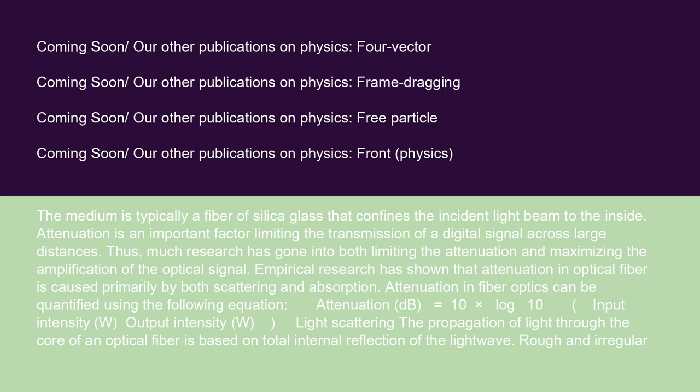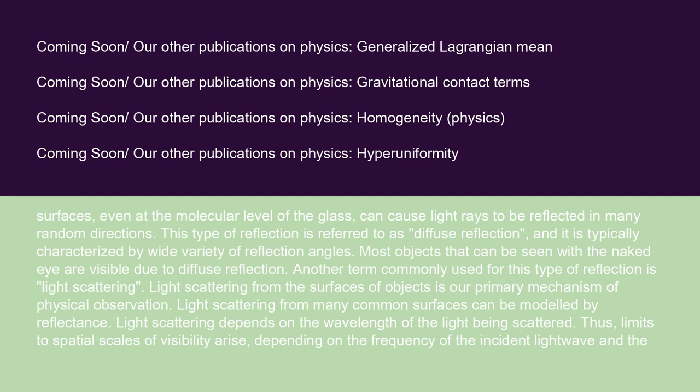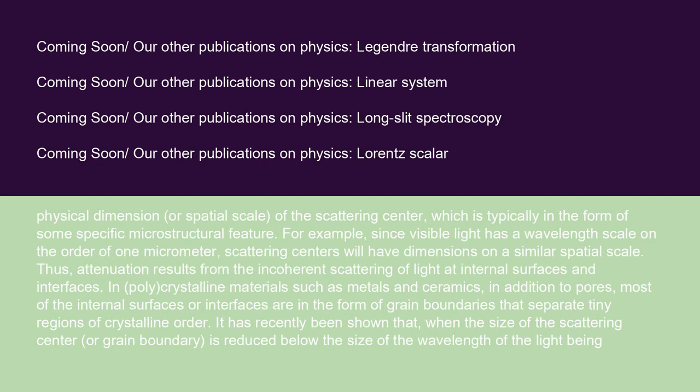Light propagation through the core of an optical fiber is based on total internal reflection. Rough and irregular surfaces, even at the molecular level of glass, can cause light rays to be reflected in many random directions — a type of reflection called diffuse reflection, characterized by a wide variety of reflection angles. Most objects visible to the naked eye are seen due to diffuse reflection, also commonly called light scattering. Light scattering from many common surfaces can be modeled by reflectance, and it depends on the wavelength of the light being scattered. Thus, limits to spatial scales of visibility arise depending on the frequency of the incident light wave and the physical dimension of the scattering center.